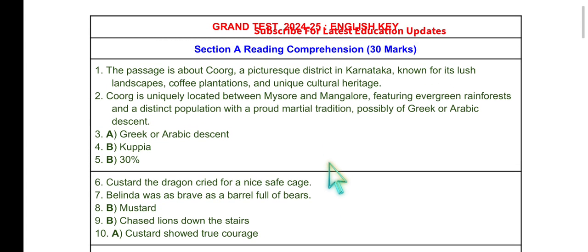The first passage is from the lesson 'Glimpses of India,' Unit 5 Part B, about Coorg. This is a passage extracted from the lesson starting with the line: 'Midway between Mysore and the coastal town of Mangalore sits a piece of heaven that must have drifted from the kingdom of God.' The first question is a global question: what is the passage about? The passage is about Coorg, a picturesque district in Karnataka known for its lush landscapes, coffee plantations, and unique cultural heritage.